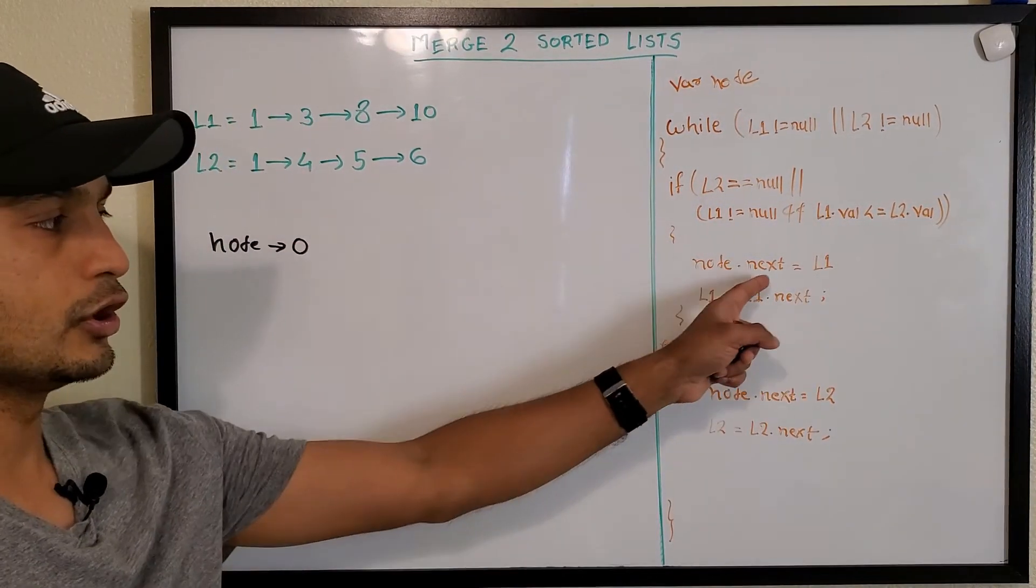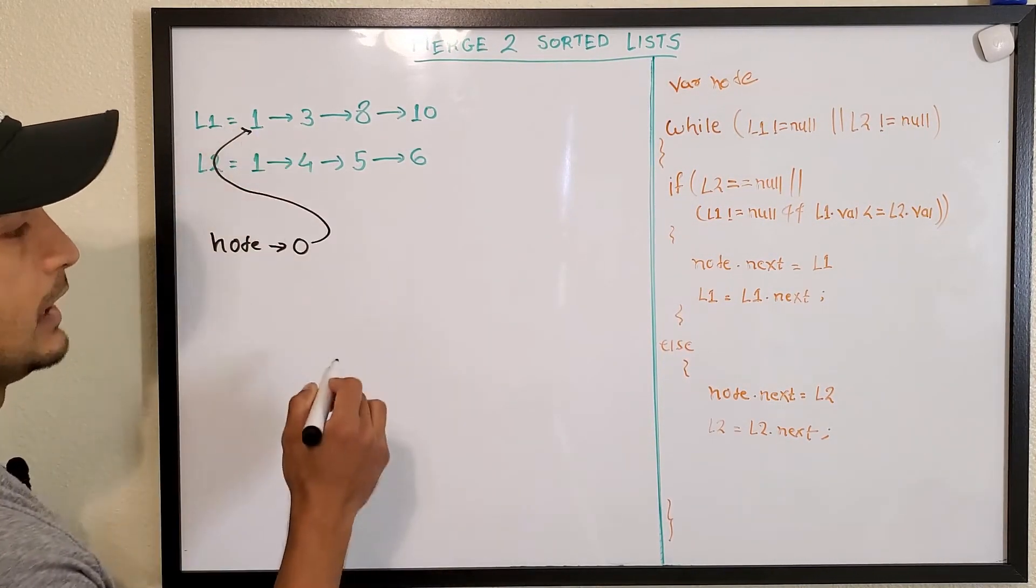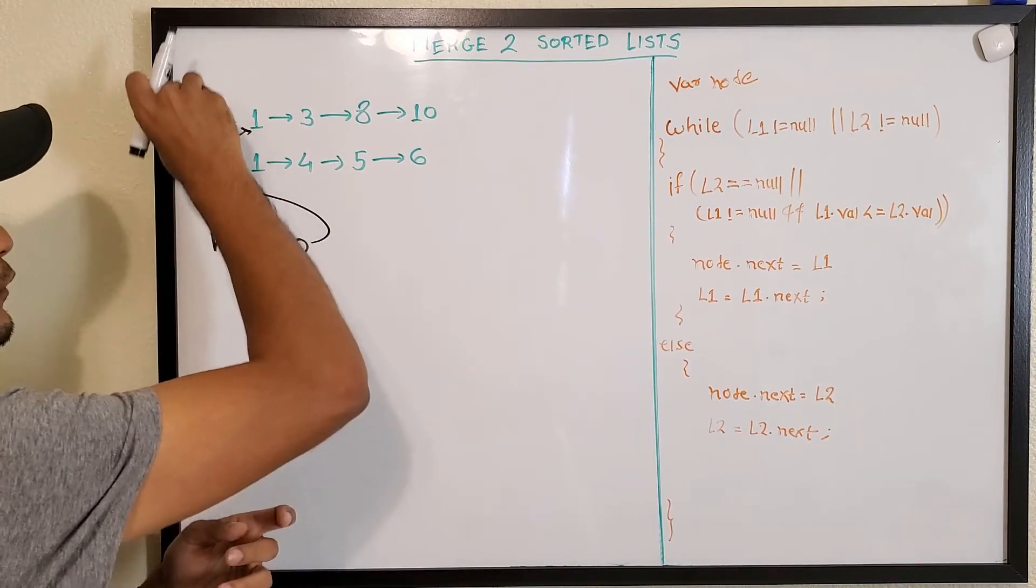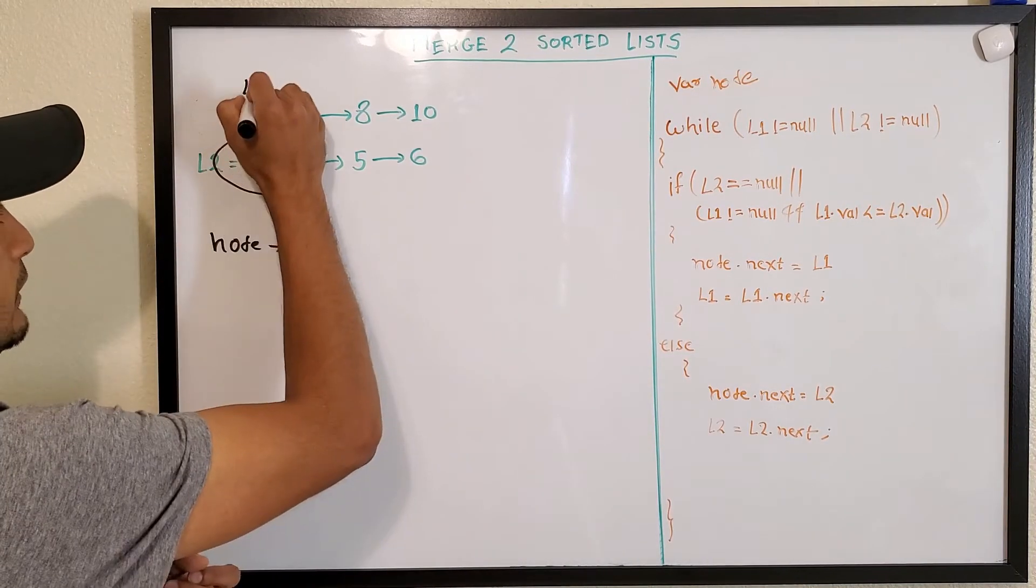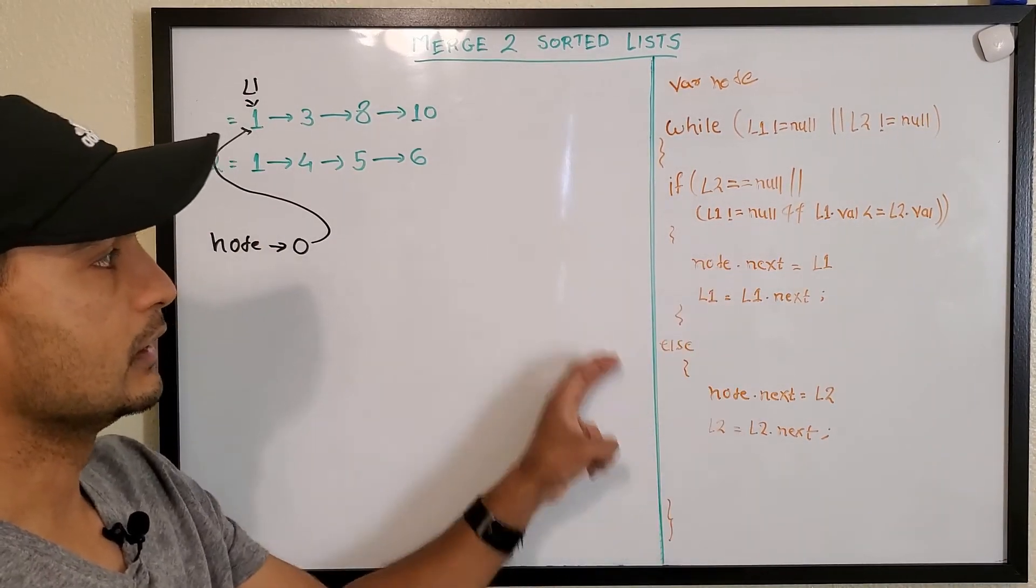We'll say node.next is equal to L1, so this will point here and then L1 will move to next node. So L1 will go here. Okay, so this is done.